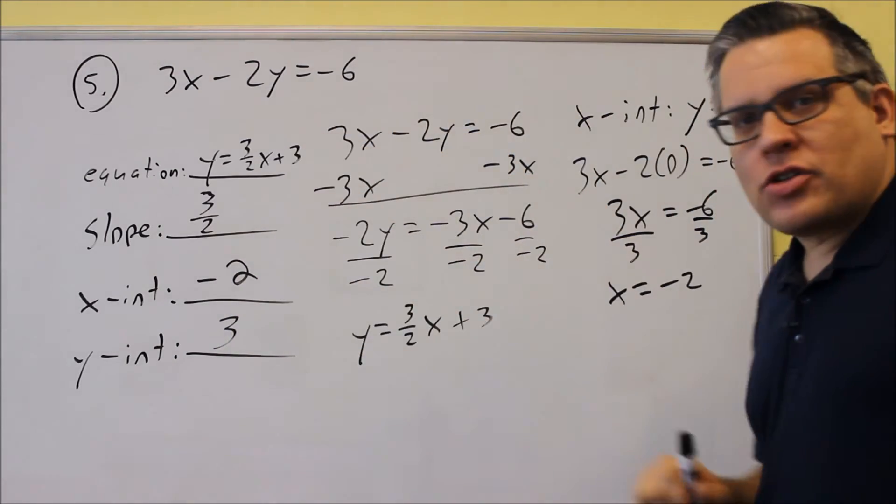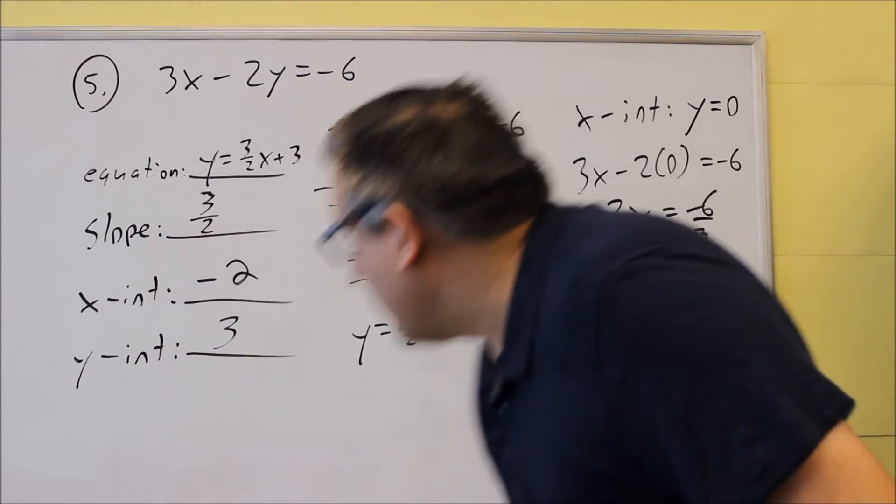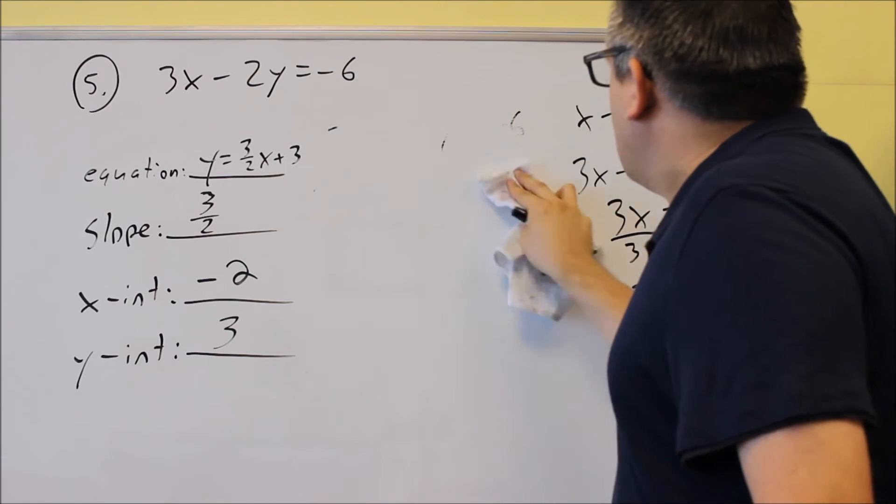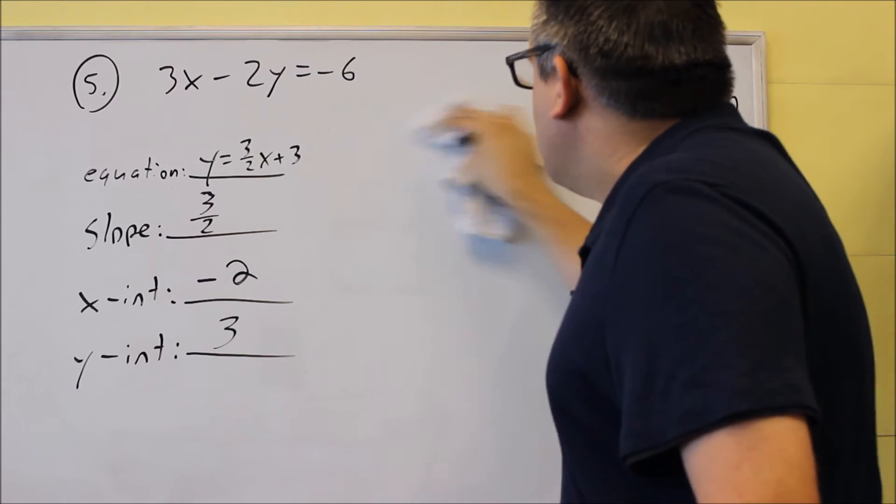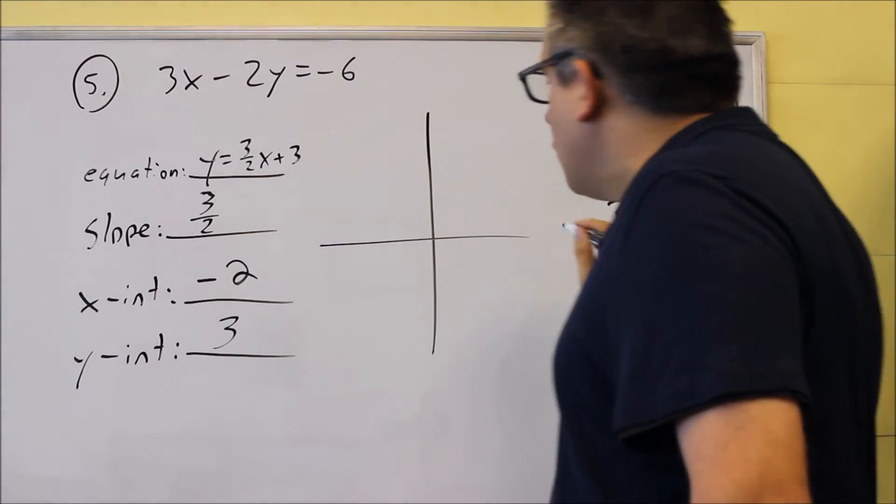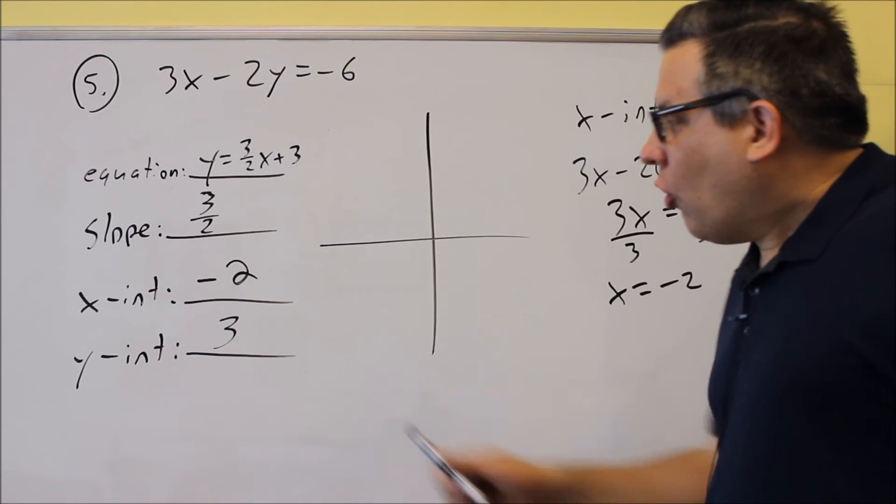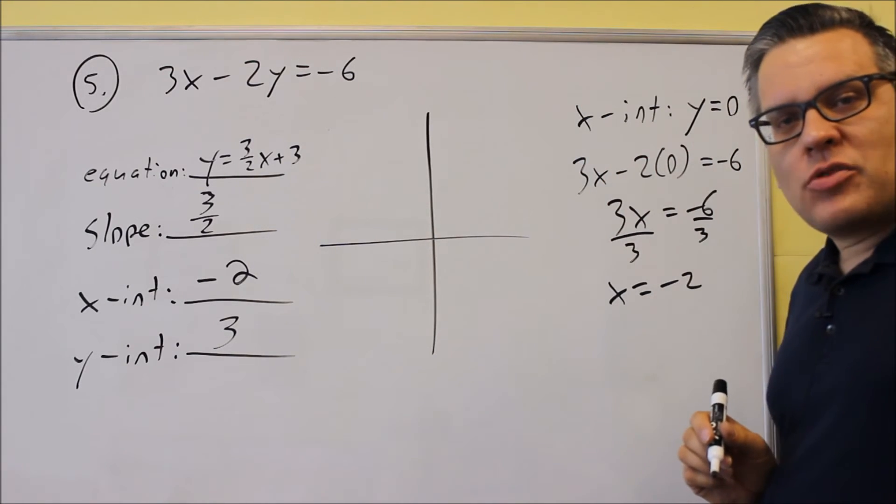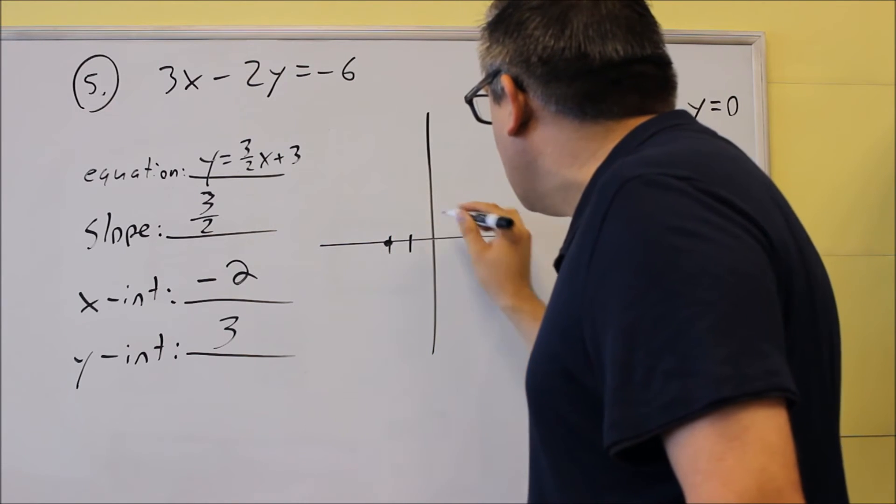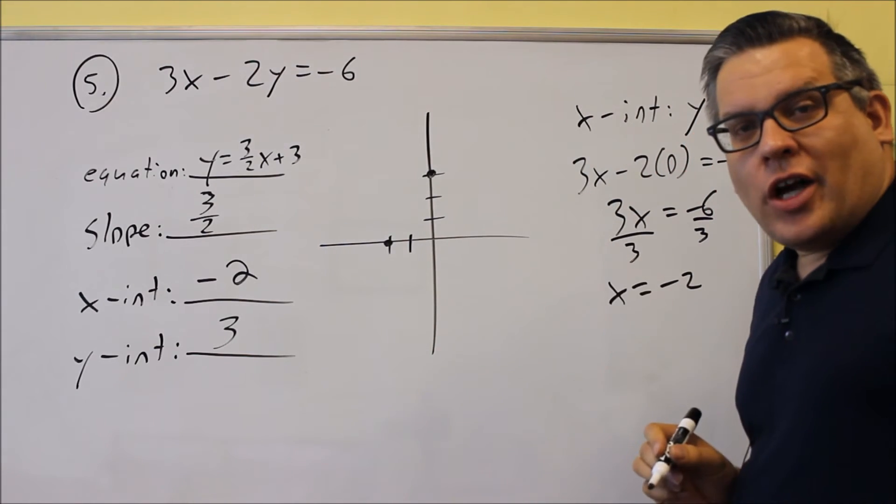Now that we have all this information complete, the last thing that we're going to do is graph it. Now, for this one, you can graph it using whatever method that you choose. Okay, so we can either use the slope on the y-intercept to graph it, or we can actually just plot our intercepts. So in this case, what I'm going to do is I'm going to plot the intercepts here. So now I have negative 2, and I have positive 3, and that's going to give me two points on my line.